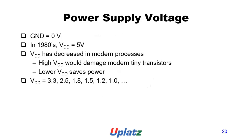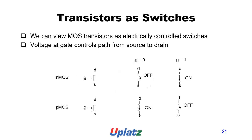Power supply voltage: ground is 0 volts. In 1980, VDD was 5 volts. VDD has decreased in modern processes — higher VDD would damage modern transistors. Lower VDD saves power. Modern VDD values include 3.3V, 2.5V, 1.8V, 1.5V, and below.